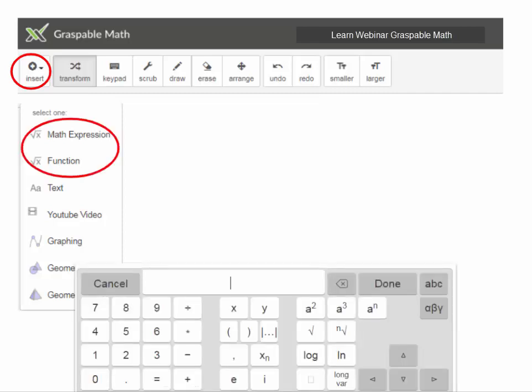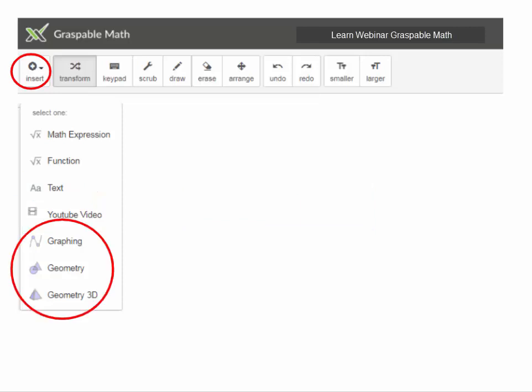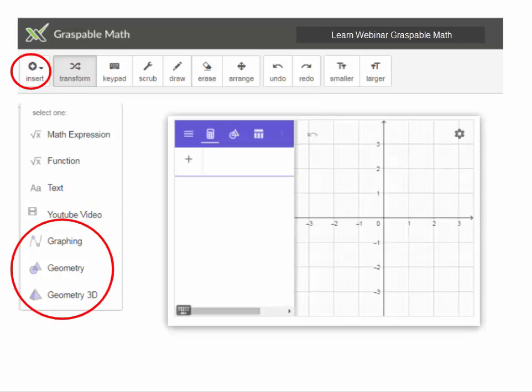Clicking on either of the first two brings this keypad, so you can type any arithmetic or algebraic expression you want in it. Here's what the Text tool looks like. It's a fairly limited formatting tool, but all you can do right now is make the text bigger or smaller. YouTube video is self-explanatory. It inserts a YouTube video for you, and if you click on any one of these last three, it opens a fully functioning interactive GeoGebra graph. And if you already have a GeoGebra graph that you want to insert, that's possible as well.